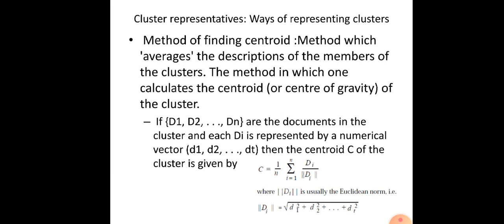D1 means the first term, d2 means the second term, and dt means the tth term. In this way we find this value for each and every document, sum them up using that sigma, and then we get the centroid.